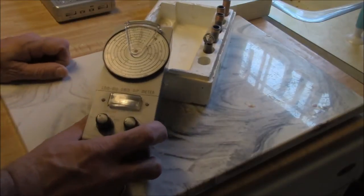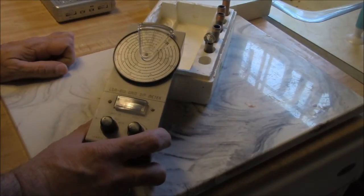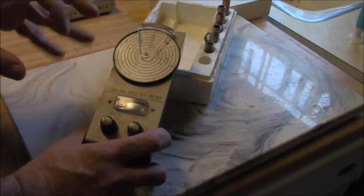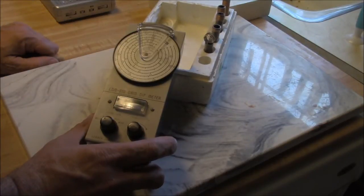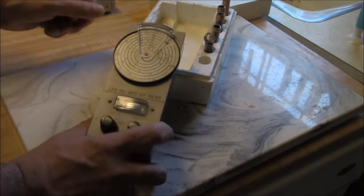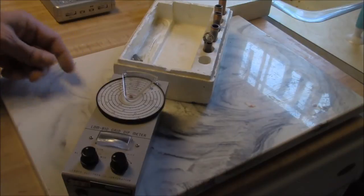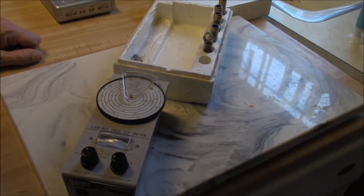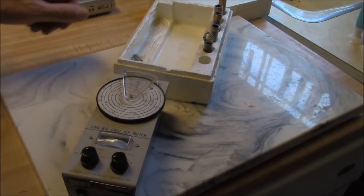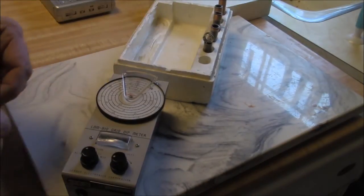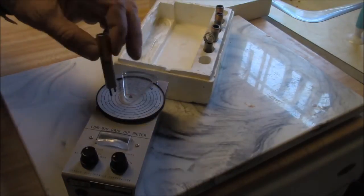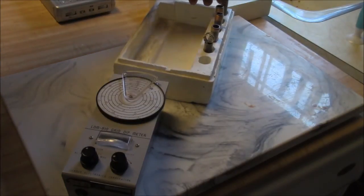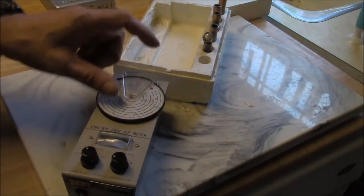The original grid dip meters used vacuum tubes and this one has a tiny little baby Nuvista tube in it. A grid dipper is a multi-purpose tool that would take up the space of a number of pieces of test equipment if you know what you're doing. It has a number of different coils, there are six in here, and they're for each of the little bands.